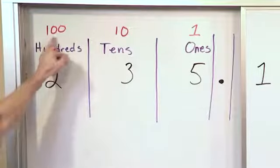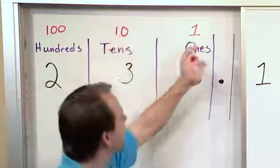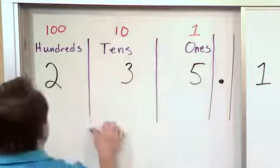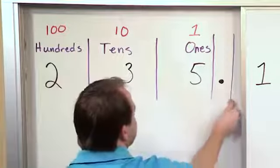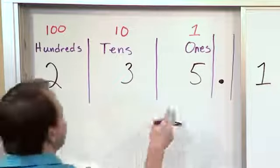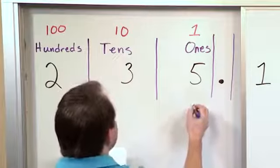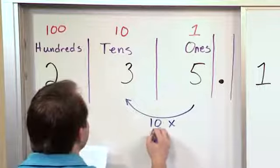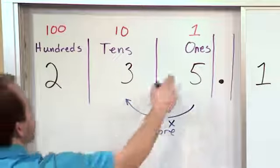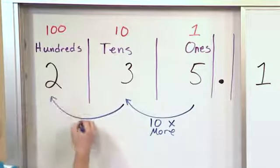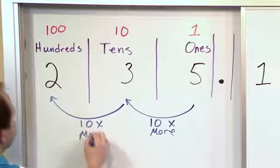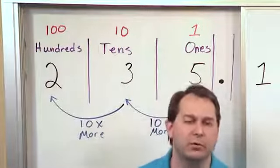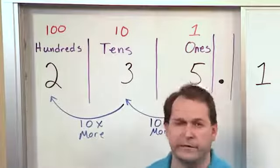This pattern continues. This digit is worth 100, this digit's worth 10, this digit's worth 1. Every time we go to the right, when we move from one digit to the next, it's worth 10 times more. As we move this way, this digit is worth 10 times more than the previous digit. That's how it's all set up. I'm telling you this about the left side because you all should know the place value for 235. But now let's go on the other side of the decimal point.